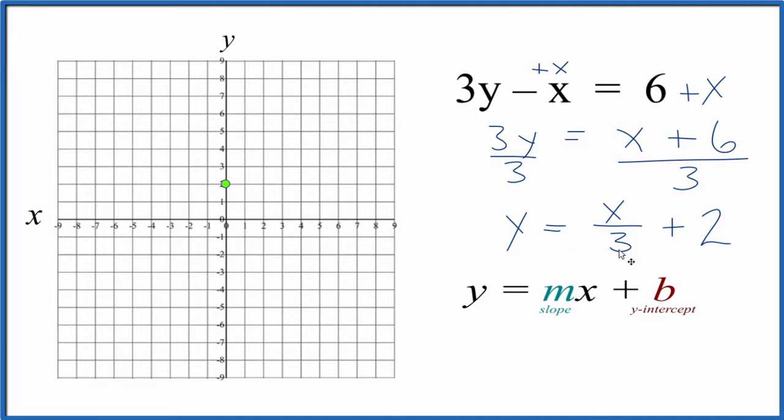And then for the slope, let's call this 1x over 3. 1x is still just x, but now we have 1 over 3. We can call the 1 rise and the 3 run. So our rise is 1 and the run is 3.